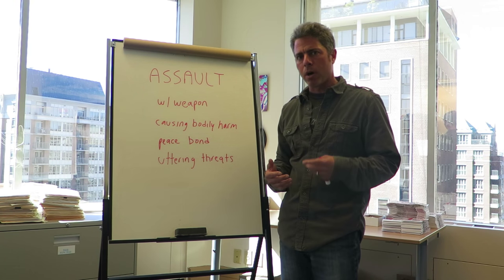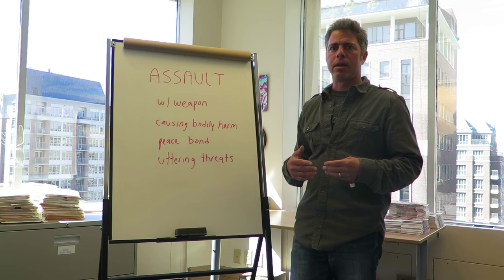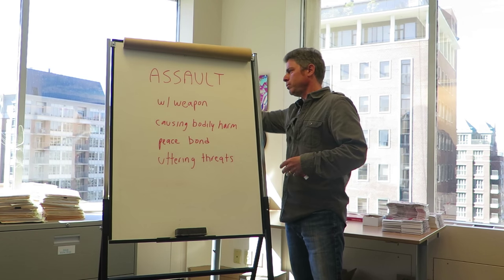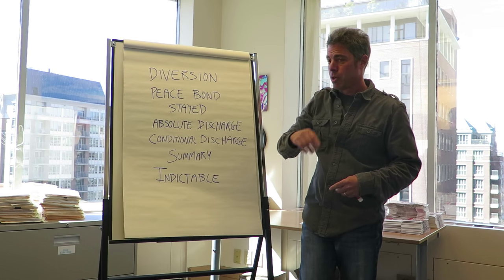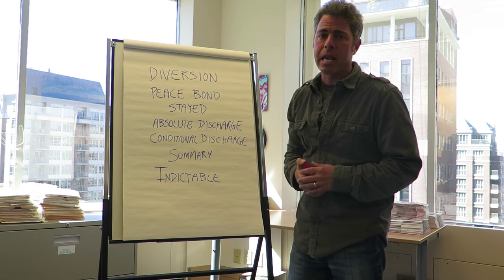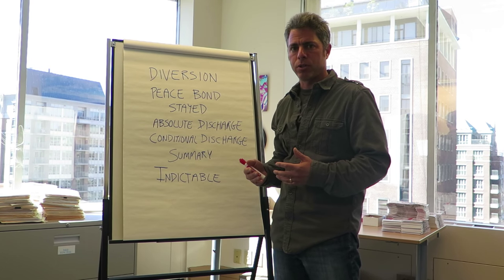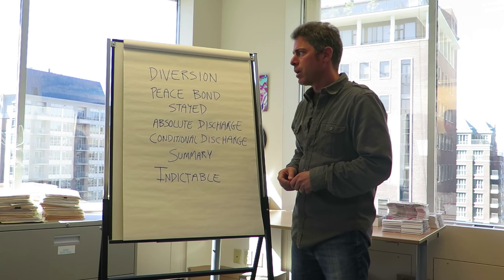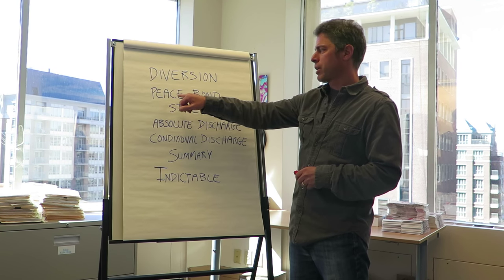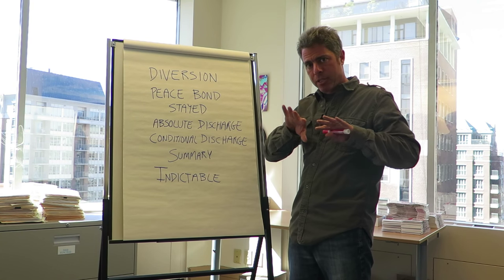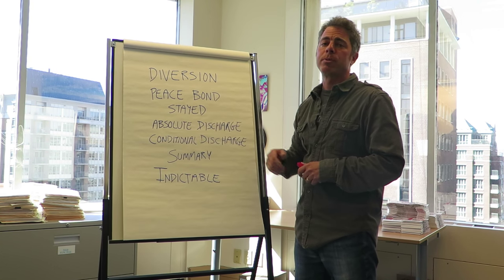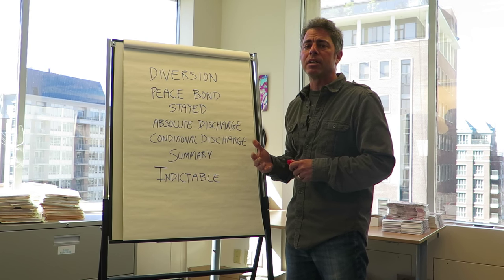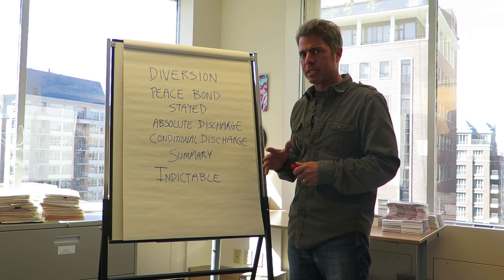Once you appear in court, the judge will make certain decisions and outcomes based on the circumstances. There are a number of possible outcomes for assault charges. The first is a diversion. You can also get a peace bond, which is a promise to stay away from each other. The charges can also be stayed — meaning it's more like a slap on the wrist.